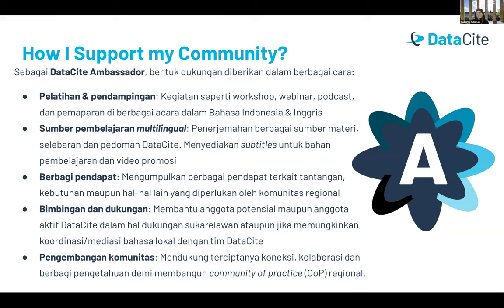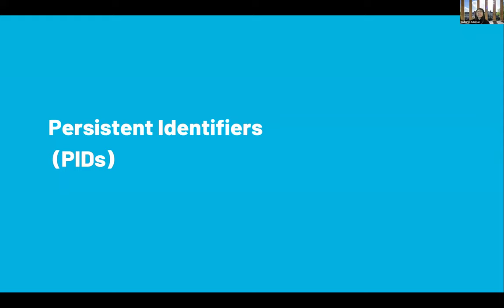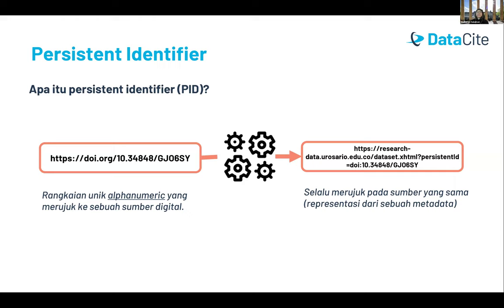Misi saya hari ini adalah memperkenalkan DataCite dan visi-misinya untuk mempromosikan penggunaan Persistent Identifier (PID) di Indonesia. Apa itu Persistent Identifier atau PID? Serapan bahasa Indonesia-nya adalah pengidentifikasi yang persistent atau tetap. Umumnya kita kenal dengan DOI, di mana definisinya adalah rangkaian unik alfanumerik yang merujuk ke sebuah sumber digital. Rujukannya selalu kepada sumber yang sama, yang tetap, yang persistent — umumnya dalam bentuk metadata.